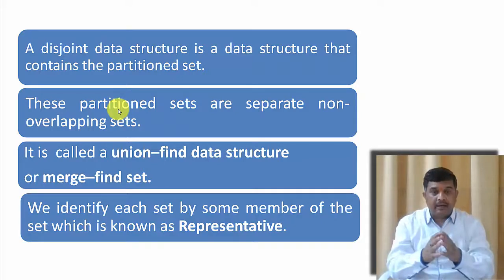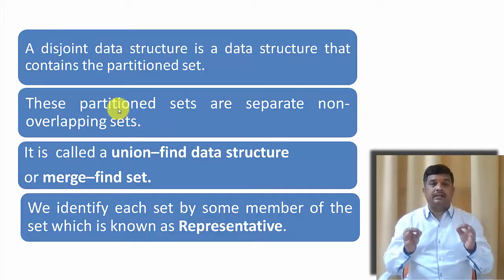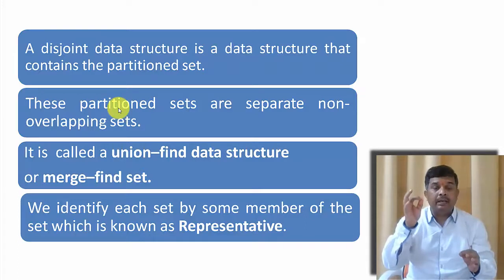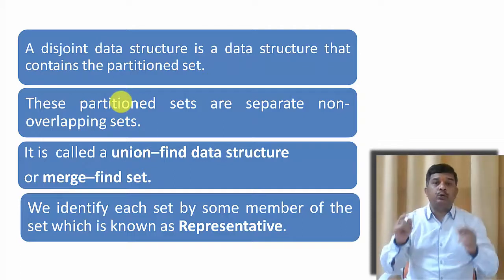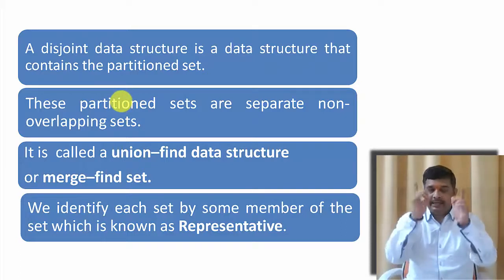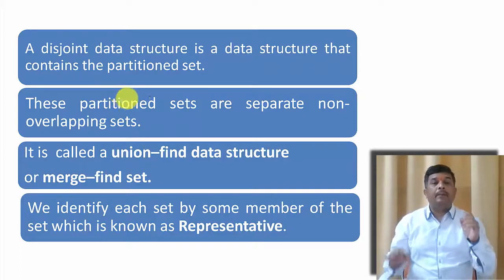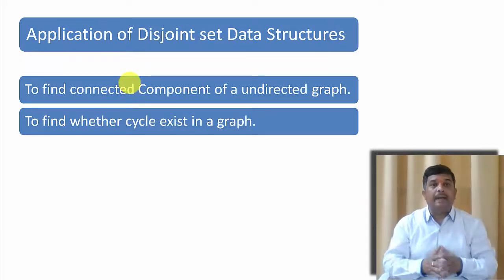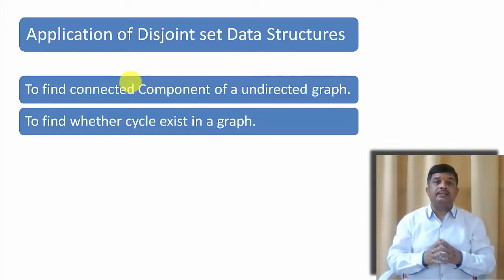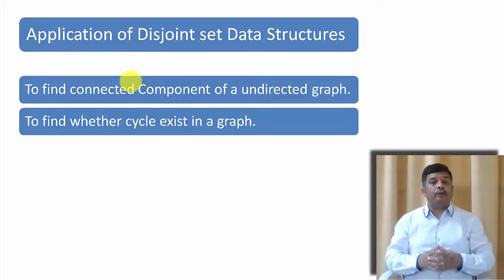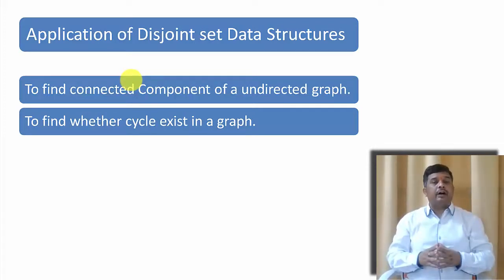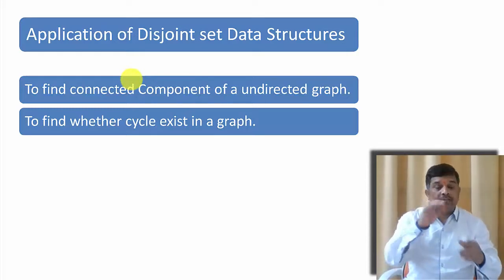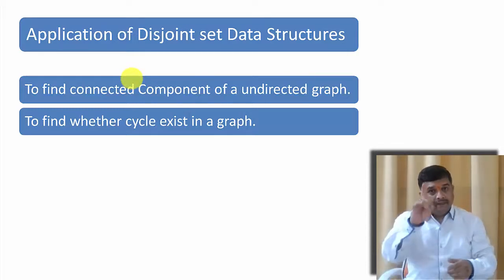It means if a set is there, to identify the set, we will have a member element. Through that member element, I will say this element belongs to this particular set. We will see this during an example. Now, before we start, let us find what are the applications of Disjoint Set Data Structure. We use Disjoint Set Data Structure to find the connected component of an undirected graph, and we check whether a cycle exists in a graph or not. In our next video, we are going to cover the application of Disjoint Data Set. Please watch that.